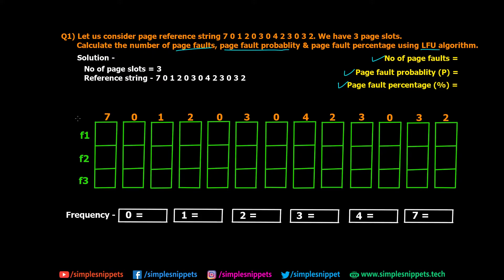In the diagram, I've drawn the three page slots, and for every iteration I've noted the page numbers. Below, we maintain the frequency of each unique page. Whenever a page comes into memory, we increment its frequency to one. Right now all values are null or zero, but as soon as a new page comes in, we increment the count of that particular page and keep track of it.